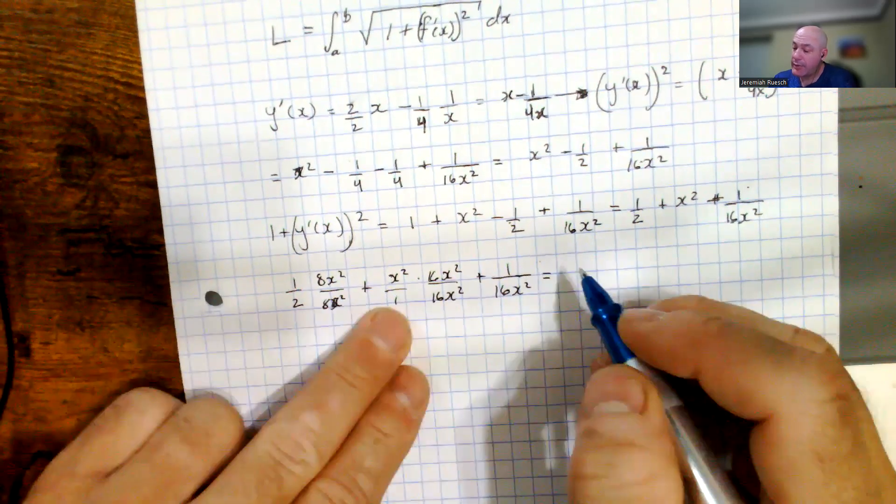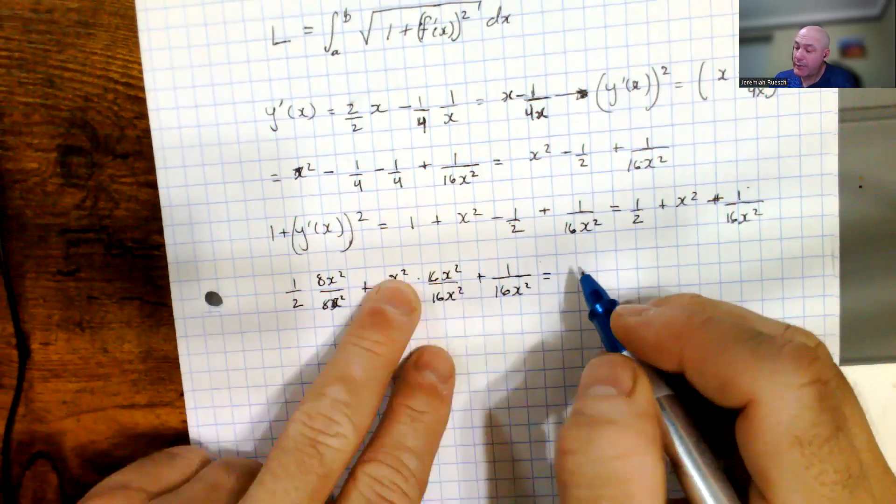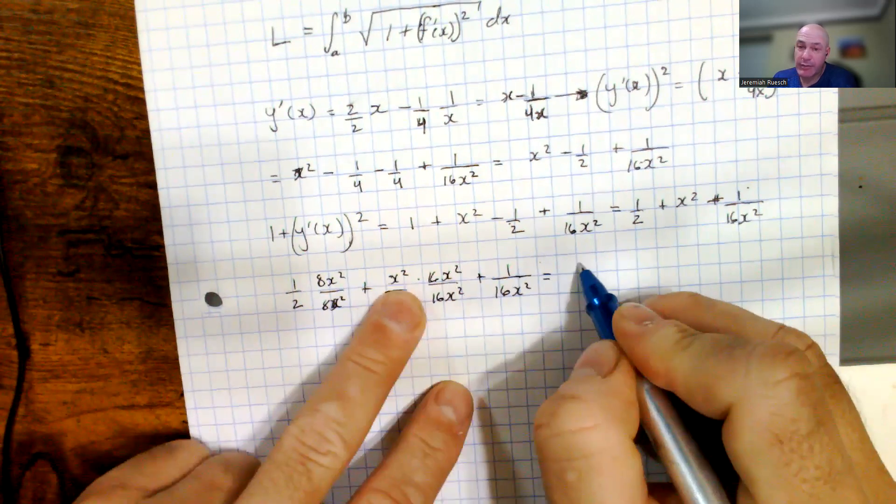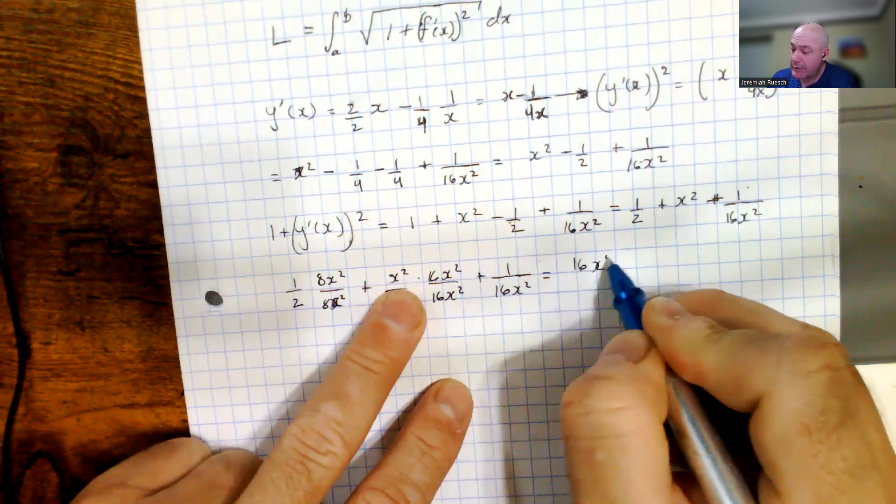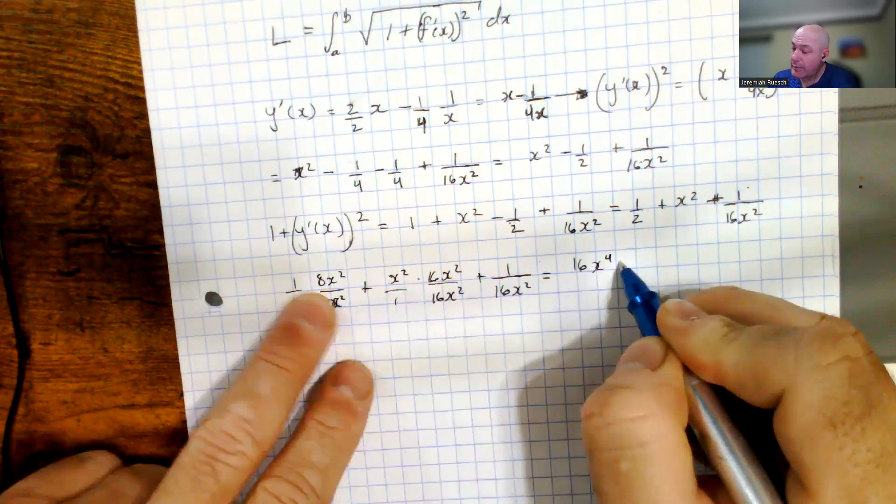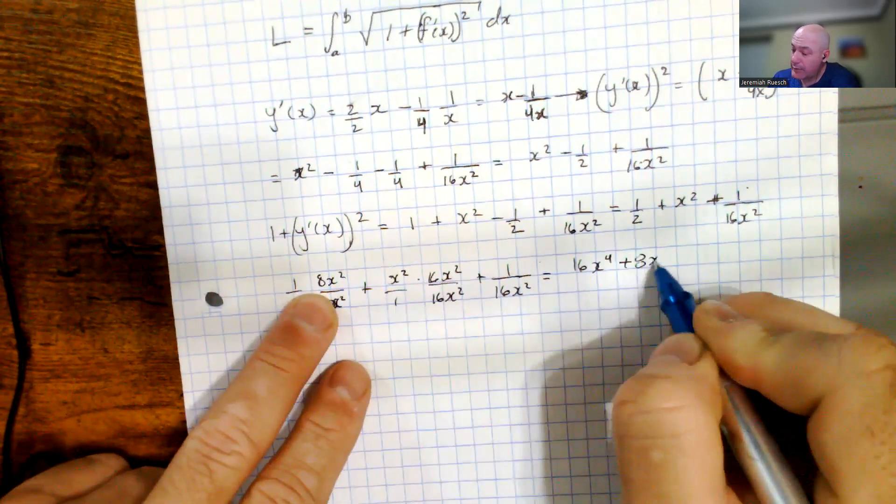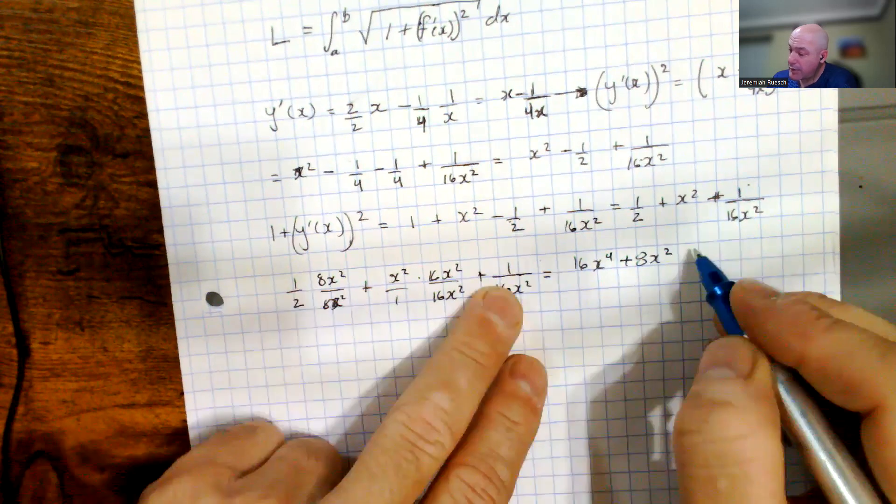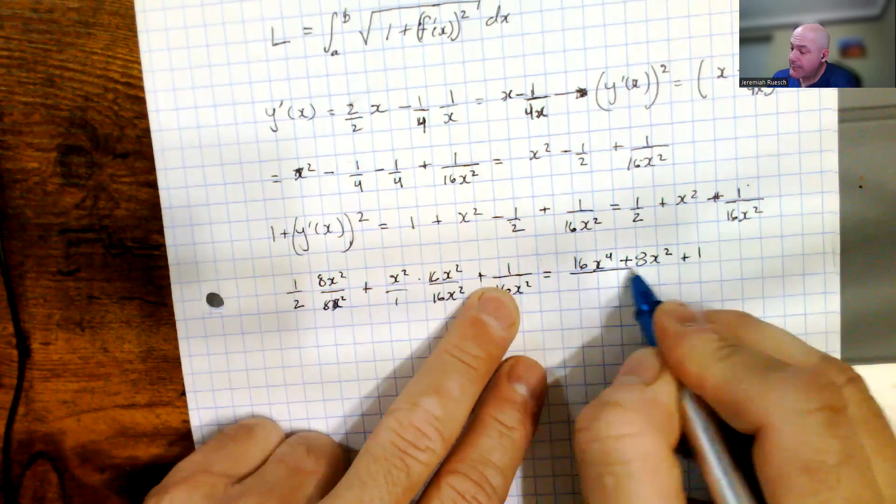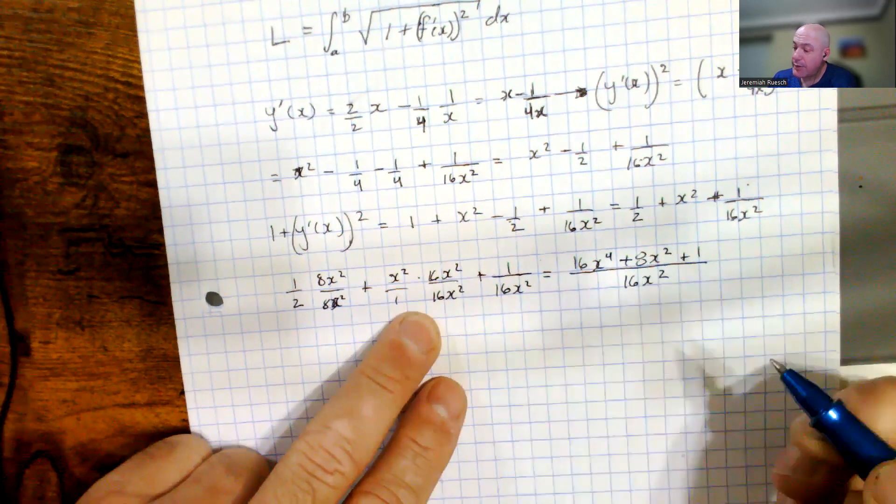Combining like terms, it looks like we have a 16x to the fourth, so I'm going to do them in standard form, so highest x minus 4, so 16x to the fourth, looks like plus 8x squared, looks like plus 1, all divided by 16x squared.